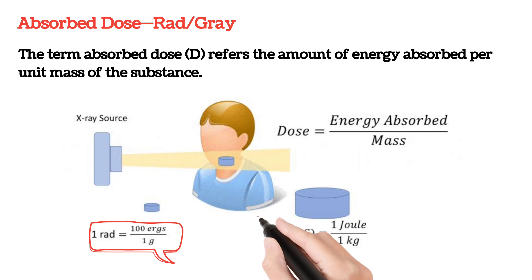The SI unit of absorbed dose is gray. The unit rad is related to gray as 1 gray equals 100 rads.